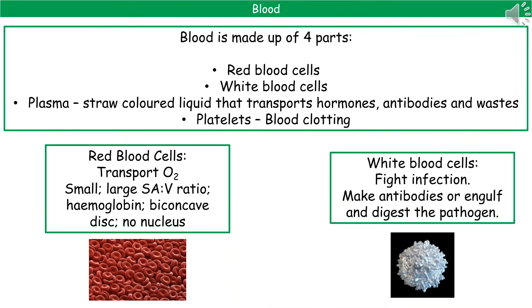The blood itself is made up of four parts: the red blood cells, the white blood cells, plasma — which is the straw-coloured liquid that transports hormones, antibodies, wastes, etc. — and the platelets, which are involved in blood clotting.